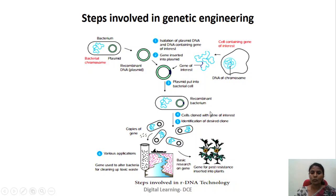For example, if we introduce a gene used to clean the environment, the bacteria multiplied in large numbers can be introduced into areas where environmental cleanup is needed. Similarly, if the recombinant DNA is introduced into a plant, we can observe plants with disease resistant or drought resistant character.